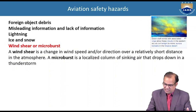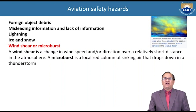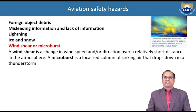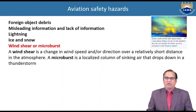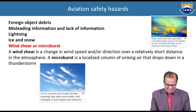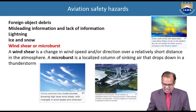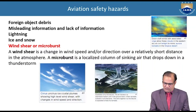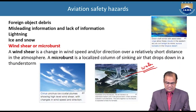A microburst is a localized column of sinking air that drops down in a thunderstorm — it is a downdraft with ice crystals. The illustration shows a microburst where all of a sudden a huge amount of water falls rapidly. Both wind shear and microburst are significant aviation hazards.